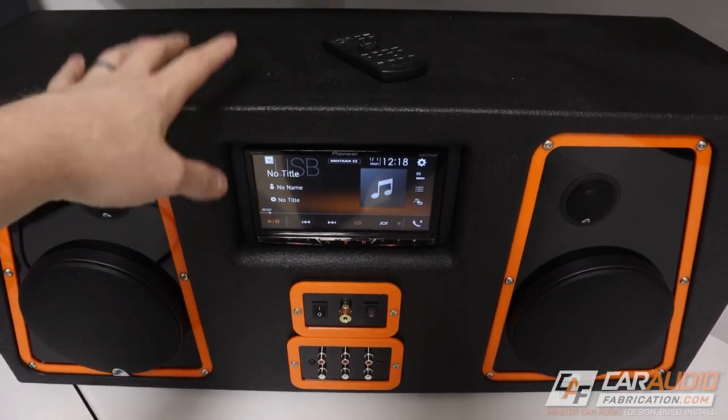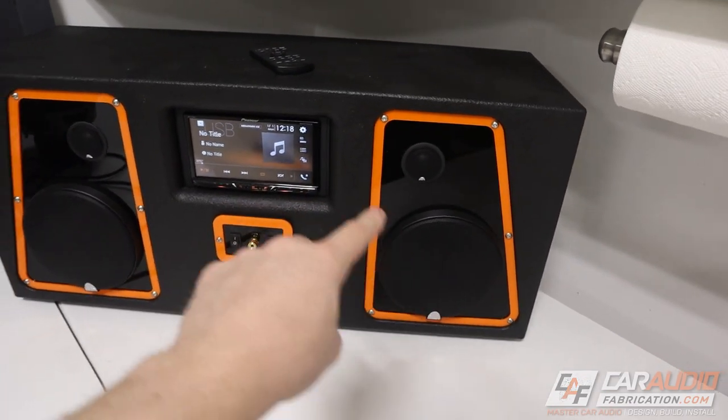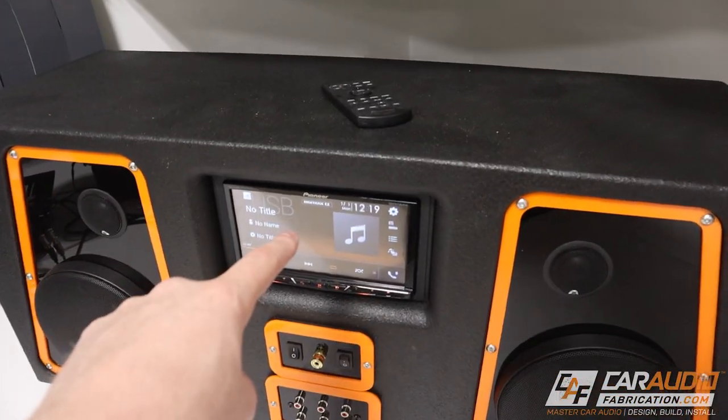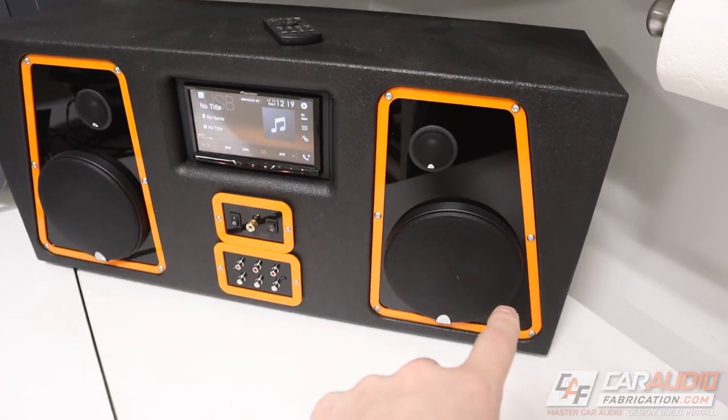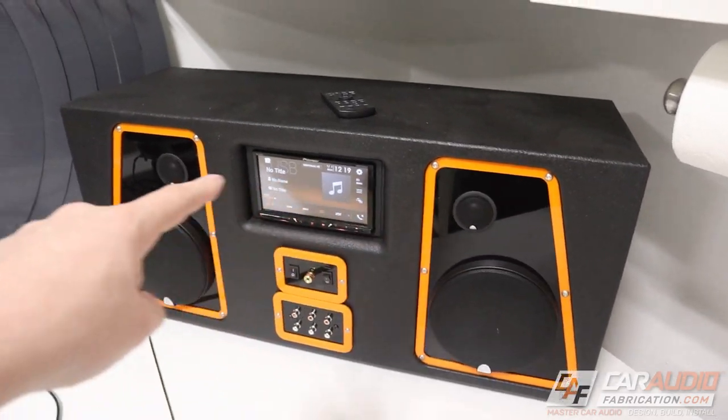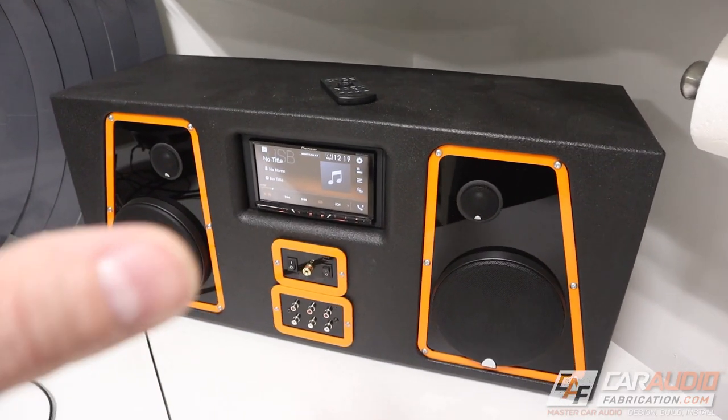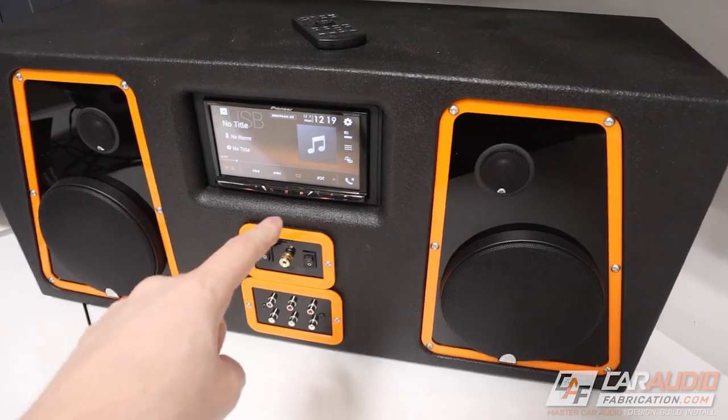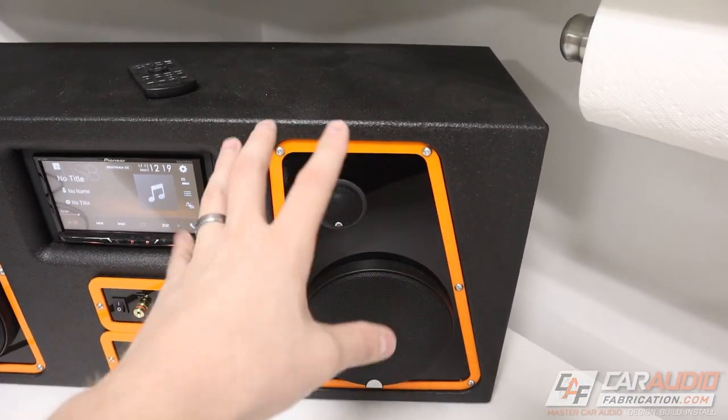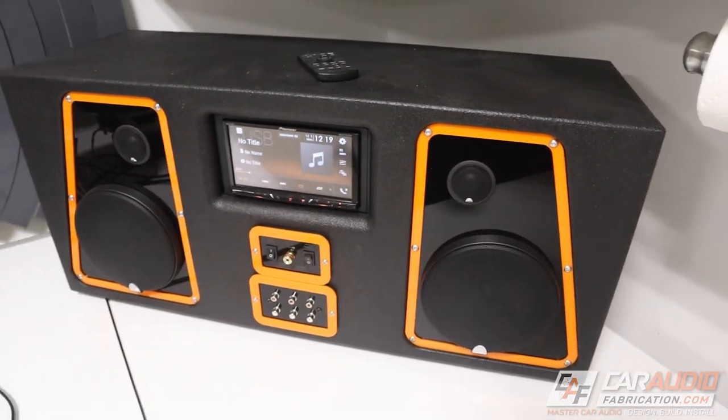That's why in a recent video, I built this using some old car audio gear. The main source here is a double din head unit, and we have a set of six and a half inch speakers along with component tweeters. Since I do a lot of testing here on the channel, I actually made these plates so that I could remove them and swap speakers in and out.